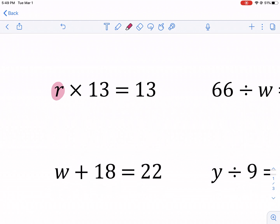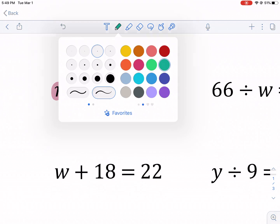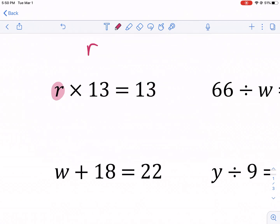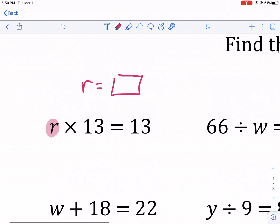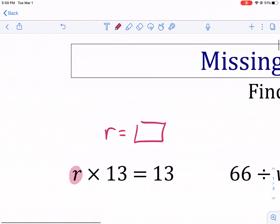So now we're trying to isolate R. We're trying to get R by itself on one side of the equal sign. We want it to be R equals some number right there. So the way we do this is we can think of ourselves, some number times 13 equals 13. If you're a clever person, you might be able to say, I know R is equal to one. And that's fine.